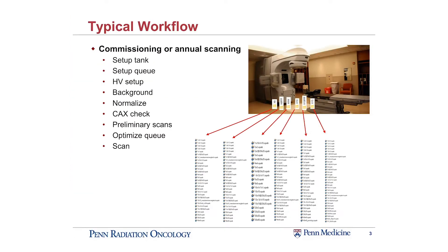When I set up the tank for either a commissioning machine or performing the annual scanning, there's your basic tank setup. I also have to find my scanning queue. We usually go through high voltage setup, we run the background, some normalization. We also do a CAX check to check the centering of our chamber. I also like to run some preliminary scans, usually in an energy that I'm familiar with — that I know what either the profile parameters should be or the PDD value should be for certain depths — just to check my setup and to get comfortable and know everything's okay before I go ahead and launch my scanning queue.